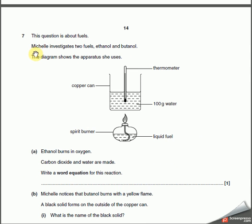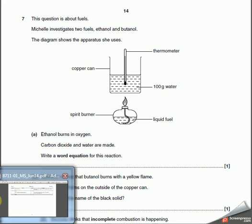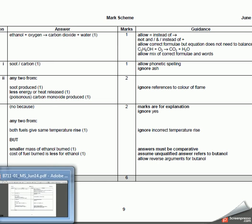Moving on to the next question. This question is about fuels. Michelle investigates two fuels, ethanol and butanol. The diagram shows the apparatus she uses. You can see it's a copper can with 100 grams of water in it with a thermometer, and there is a spirit burner with liquid fuel. Ethanol burns in oxygen, carbon dioxide and water is made. Write a word equation for this reaction. This could not be easier. When they tell you something's happening and they want it in a word equation, all they want you to do is put it in a word equation. So ethanol burns in oxygen, it must be ethanol plus oxygen. And that was telling you carbon dioxide and water is made, so that's the products. So you do ethanol plus oxygen, then you draw an arrow, and then it would be carbon dioxide and water.